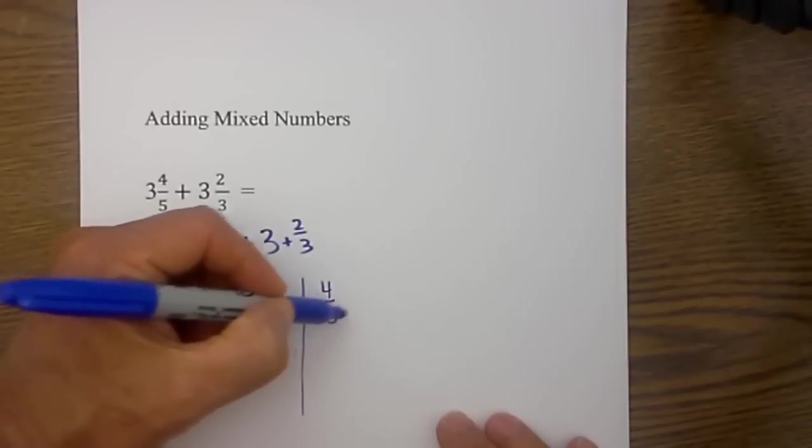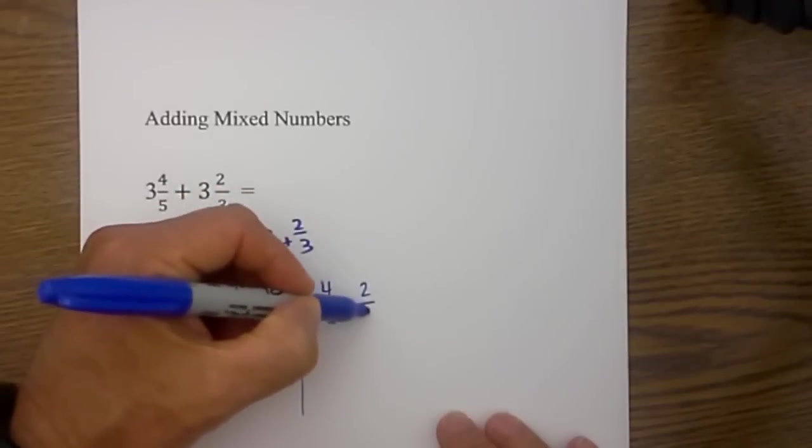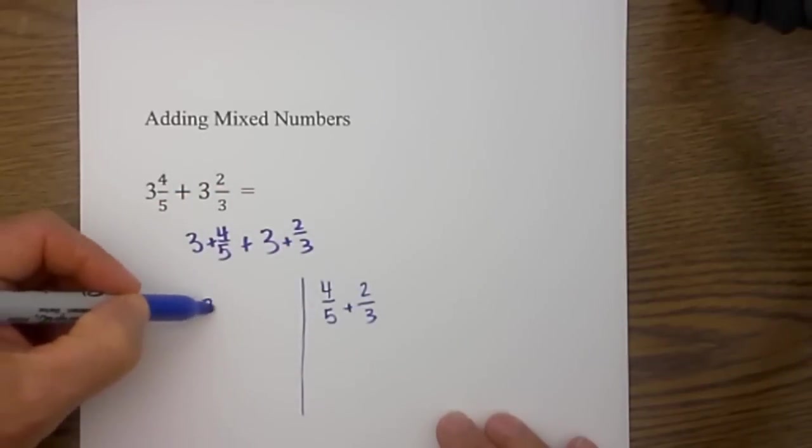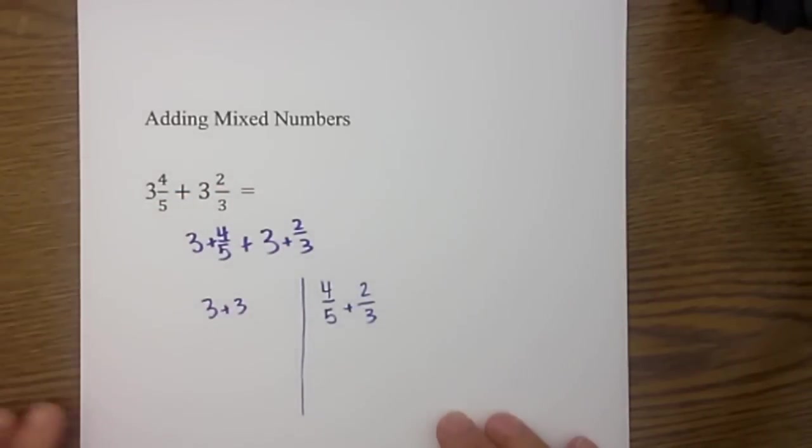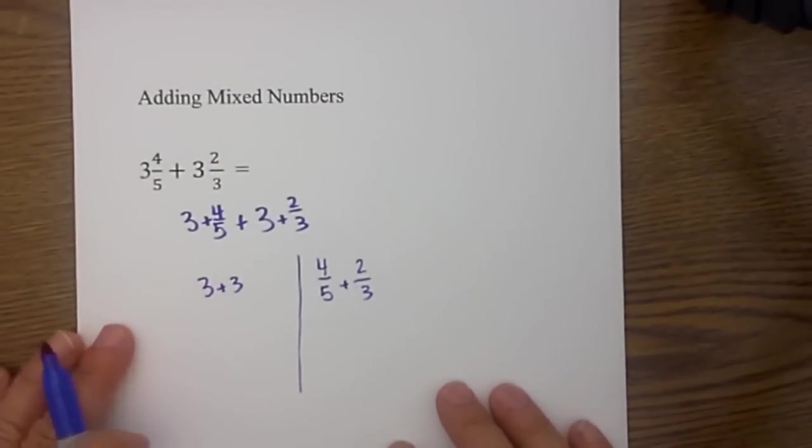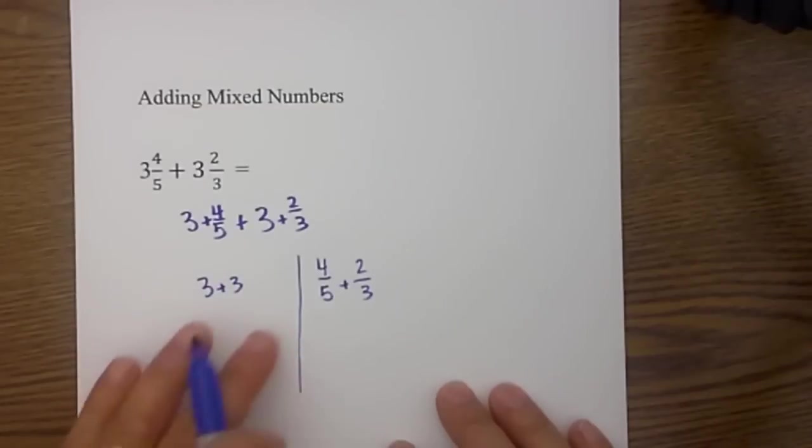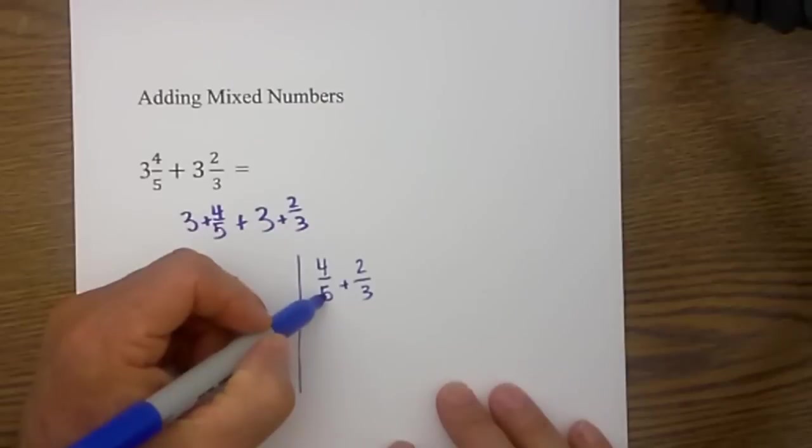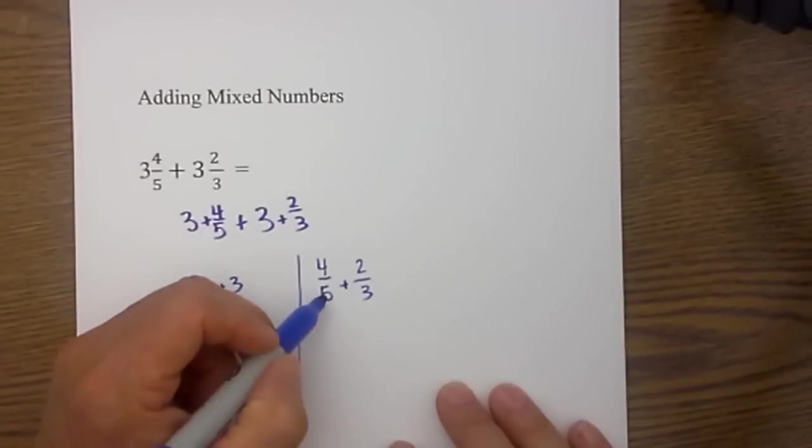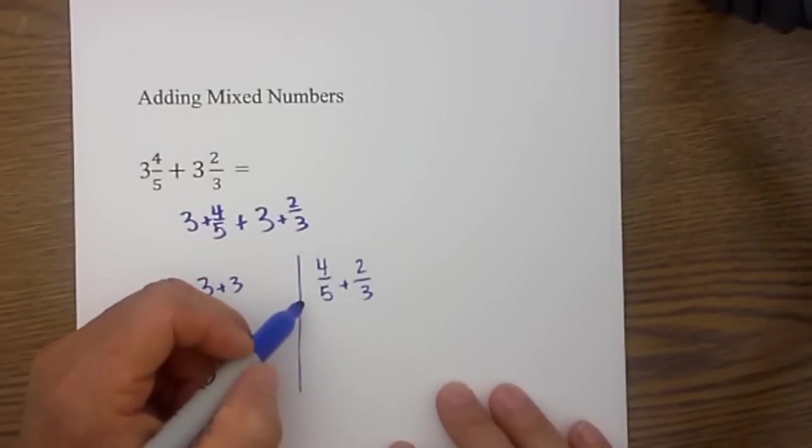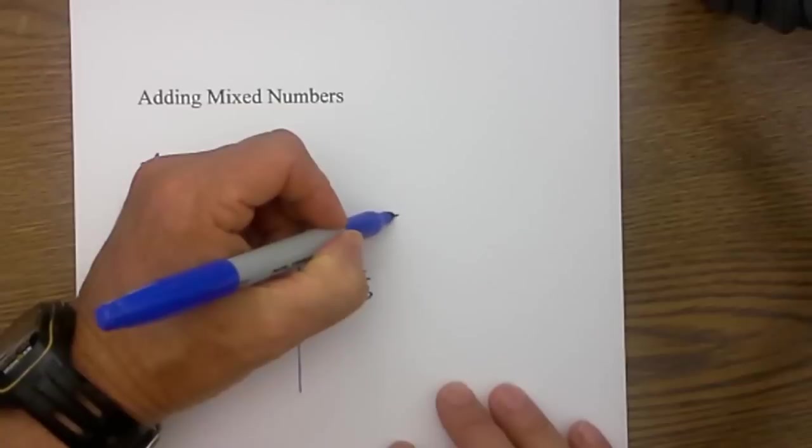So I will place 4 fifths plus 2 thirds on this side and I will place 3 plus 3 on the other. I then always begin on the side of the fraction because if you get an improper fraction you will need to move one of the whole numbers to the left. So since they do not have common denominators I need to find one and so I will use a multiplication method.